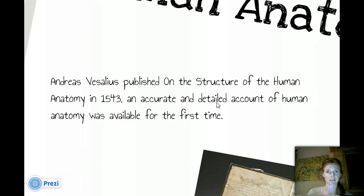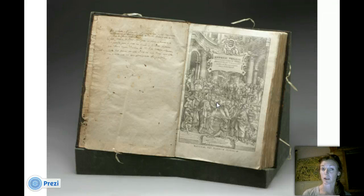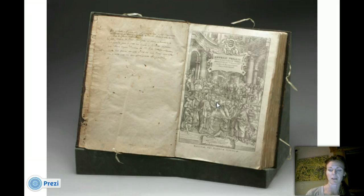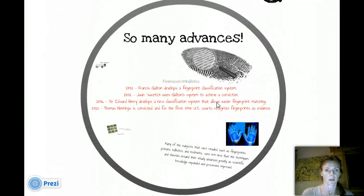But, again, this is an accurate and detailed account of human anatomy. This was available for the first time, because before then, and even Song Si, I'm sure that this was not quite as detailed as what this book might have been. So, this is a big deal, because then, once you know the anatomy, you can start to figure out what's going on, how long it took for this, why this is happening, and so forth. All of these different questions that can lead forensic scientists to further facts on what has happened in a particular crime. And, again, a lovely, really old book, kind of cool, though. I'd love to see that in person.